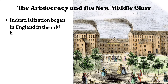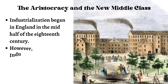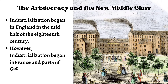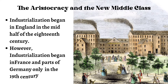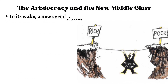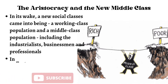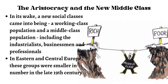Industrialization began in England in the mid-18th century; however, the same began in France and parts of Germany only in the 19th century. Industrialization brought about tremendous changes in the history of Europe from the mid-18th century, making many changes in the social and political background. In its wake, new social classes came into being — a working class population and a middle class population, including industrialists, businessmen, and professionals.